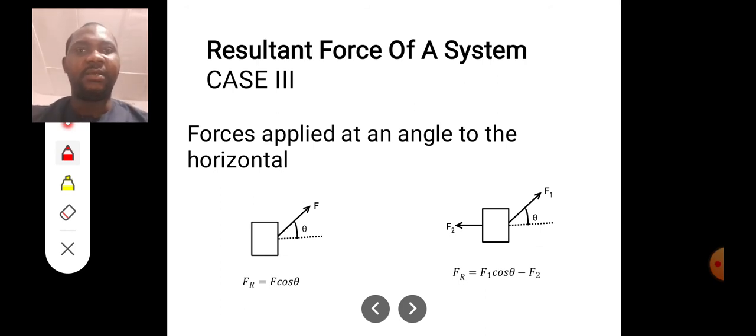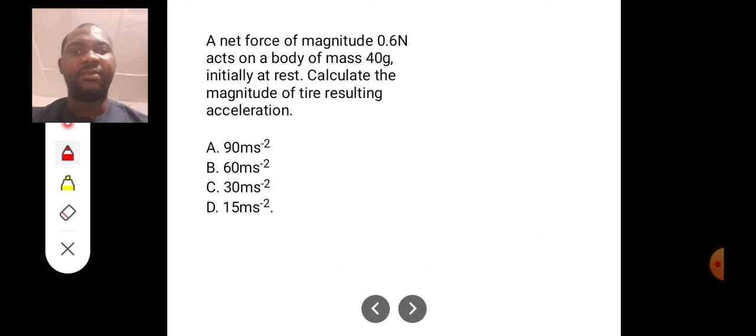When the force is applied at an angle, you can see what we have there. The resultant force here will be F cos theta. But if there is an opposing force like this one here, F2, it means that your resultant force will be F1 cos theta minus F2.